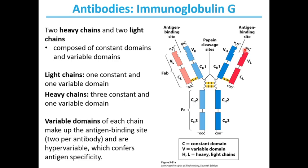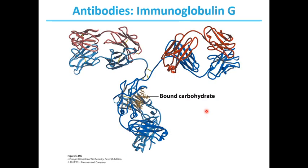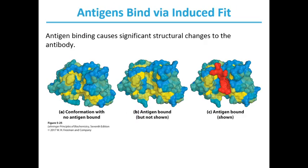A crystal structure of an antibody bound to a carbohydrate is shown in the figure. The carbohydrate bound here is not the antigen — antigens would bind to the two variable-region arms. This crystal structure is color-coded based on the previous slide: heavy chains in dark or light blue, light chains in light or dark red. Antigens bind via induced fit to antibodies, meaning binding can cause significant structural changes to the antibody.